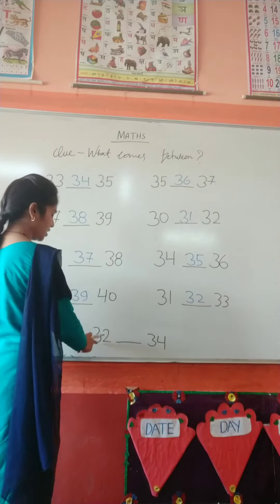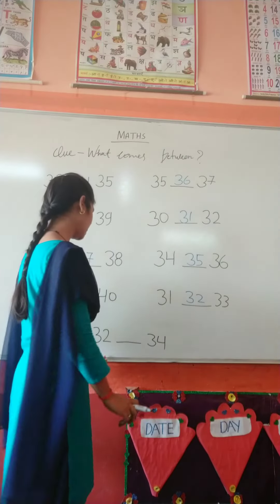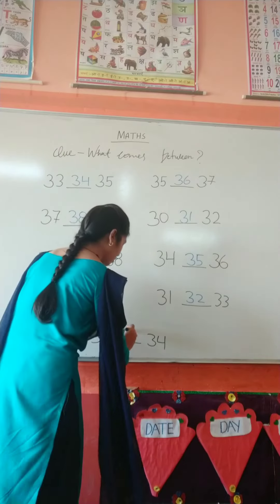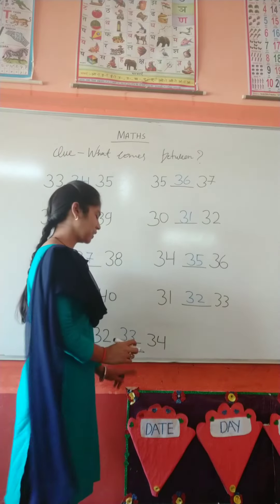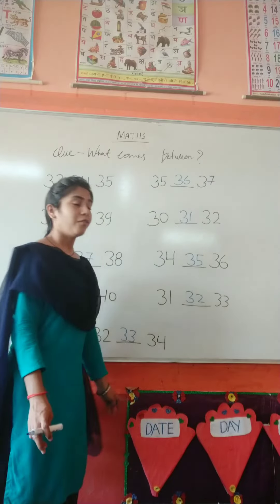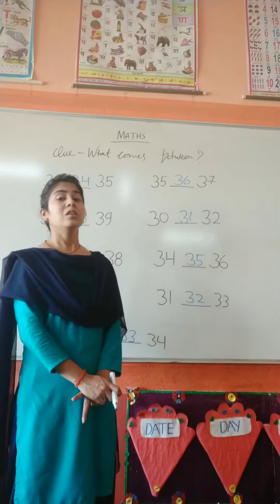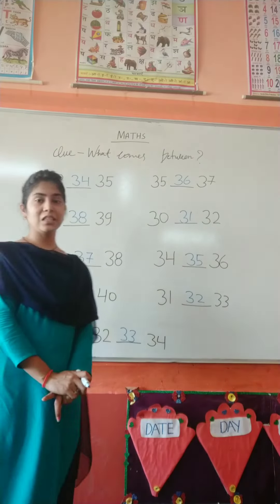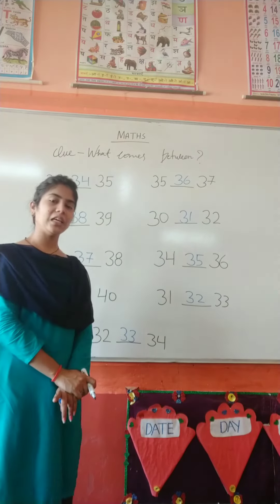And which number is this? Here is number 32. What comes between 32 and 34? 33. 32, 33, 34. Wow! So these are the between numbers. Okay? And you have to learn these numbers. Bye! Have a wonderful day. Take care.